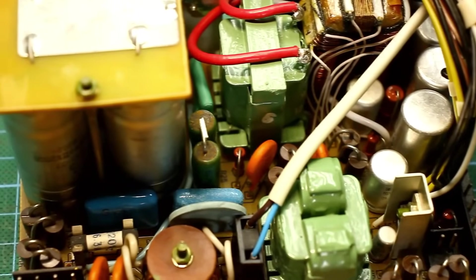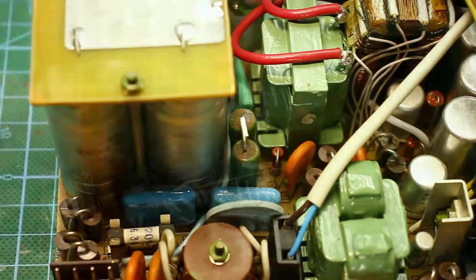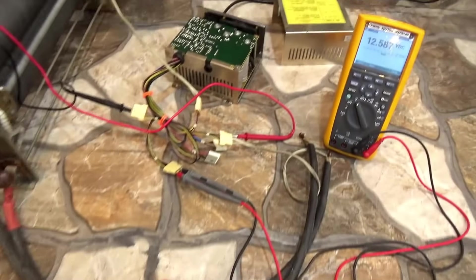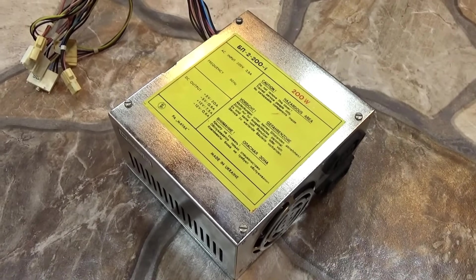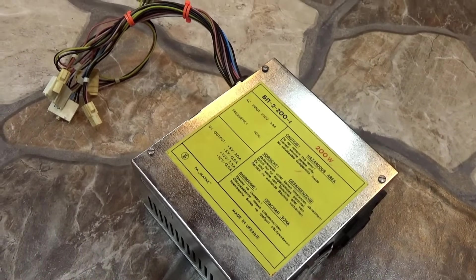Now we'll put all this together and start it up. First, through a safety lamp. As we can see, everything is humming and the output voltages are present. Next, we remove the input lamp and connect the load.